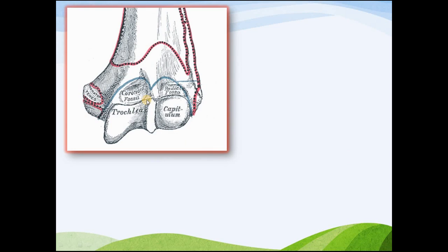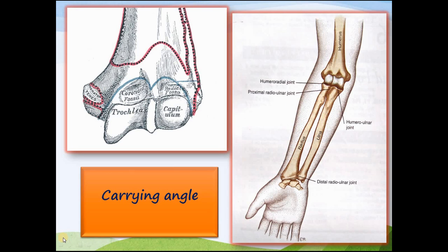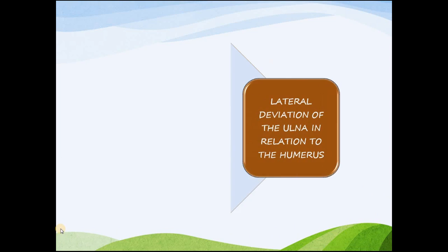In the humerus, the medial aspect of the trochlea extends more distally than the lateral aspect. This shifts the medial aspect of the ulnar trochlear notch more distally, leading to lateral deviation of the ulna in relation to the humerus. Because of this, an angle is formed between the long axis of the humerus and the ulna, which is known as the carrying angle.